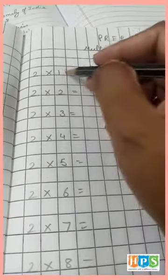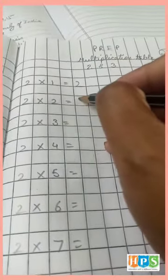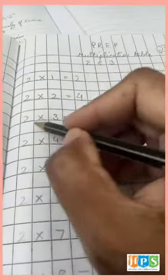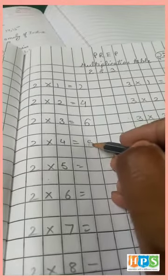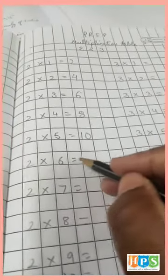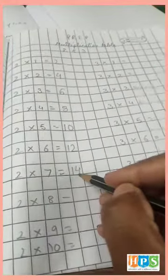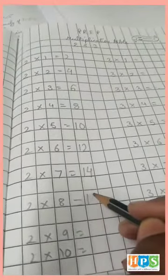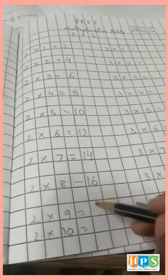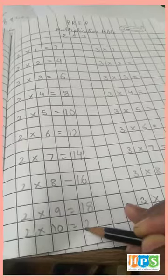2×1 is 2. 2×2 is 4. 2×3 is 6. 2×4 is 8. 2×5 is 10. 2×6 is 12. 2×7 is 14. 2×8 is 16. 2×9 is 18. 2×10 is 20.